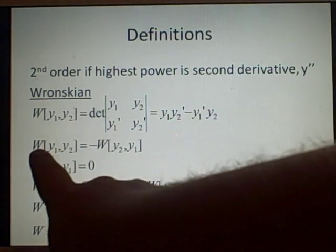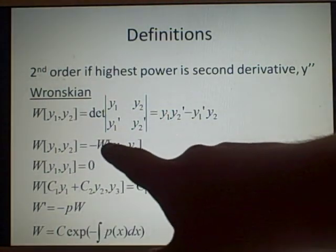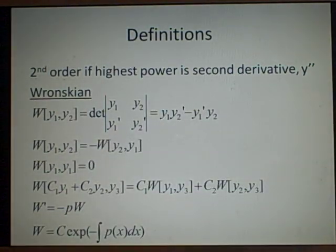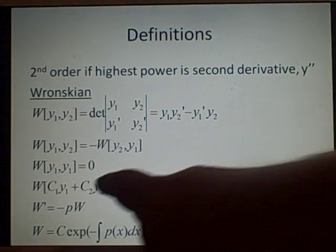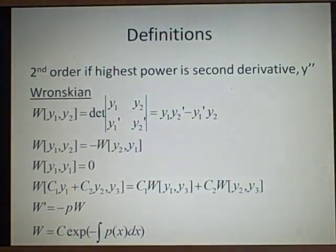So it's anti-symmetric, so W of y1, y2 is minus W of y2, y1, but you can work that out by solving the determinants here. If it's two of the same, that's equal to zero. Obviously you'll get y1 times y1 minus y1 times y1, which is zero.